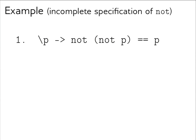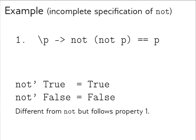As an example, I choose the boolean function `not`, which takes a boolean value and negates it. Here is a specification of `not` which is incomplete: given a boolean value p, `not (not p) = p`. Why is this incomplete? The identity function also follows this property — if we replace `not` with `id`, it still satisfies the property. Something is missing. Our function `not'`, which is actually `id` over booleans, is different from `not` but follows property one.